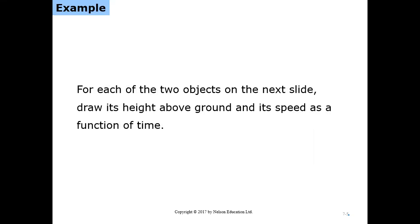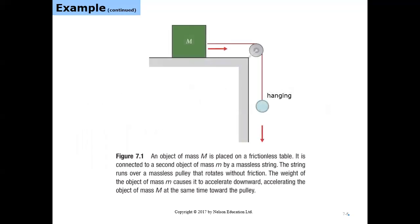For each of the two objects on the next slide, draw its height above ground and its speed as a function of time. This is the classic problem from chapter four — when you apply Newton's second law to two objects: a big mass M on the table connected by a string over a pulley to another hanging mass.